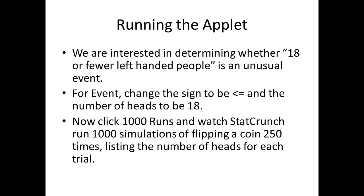Now I want you to click on the button that says 1000 runs, and you're going to get to watch StatCrunch run 1000 simulations of flipping a coin 250 times and listing the number of heads for each trial. So StatCrunch will flip 250 coins, count the number of heads, that will be like a sample of 250 people, and counting the number that were left-handed, if the 11% is valid. Then it's going to do it again and again 1000 times.